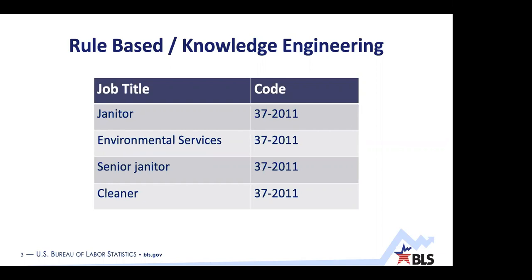To make matters worse, many of these job titles have never occurred before, so it's hard to add them to a rule-based system. And many job titles map to many different codes based on other information, such as the job title practices of specific companies and industries. The result is that rule-based approaches often take decades to build and even then often don't work very well.